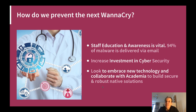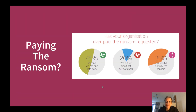So how could we prevent the next WannaCry? Staff education and awareness is key — 94% of all malware is delivered through email. Increased investment in cybersecurity and embracing new technology and collaborating with academia on more secure solutions are also important. When it comes to paying the ransom, research shows that up to 45% of organisations paid the ransom and got the data back, but unfortunately 20% also paid and did not get the data back, and only 35% said that they did not pay the ransom.